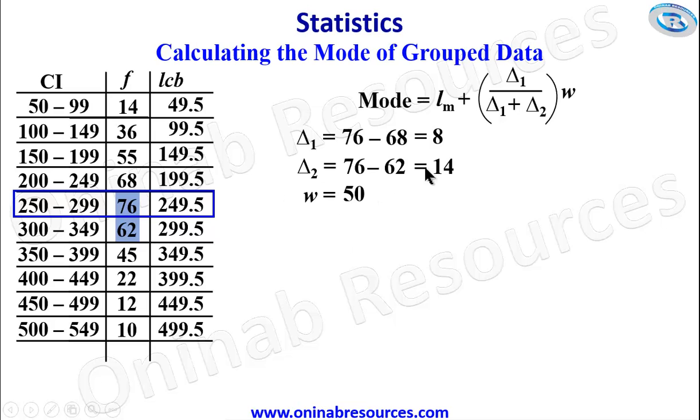Then we've gotten all the parameters needed to calculate the mode. So our mode now will be equal to our LM. Our LM here is the lower class boundary of the modal class. That is 249.5 plus delta 1. Delta 1 is 8. So I have 8 over 8 plus 14, since delta 2 is 14. Then multiply by the class width, which is 50.